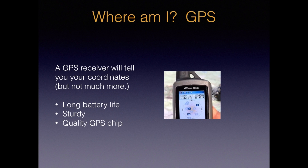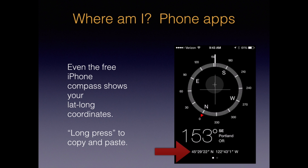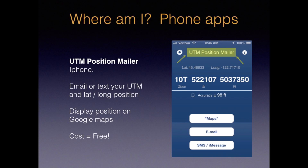Here are a few ways to get your coordinates. One is a dedicated GPS receiver. These are heavy, expensive, and only do one thing, but they have long battery life, they're sturdy, and can often get a GPS signal in a canyon or under heavy tree cover better than a cell phone. Hey iPhone users — did you know that the free built-in Compass app also shows your latitude and longitude? You can do a long press on the coordinate to copy and then paste it into a text or email. Yes, this is not a UTM coordinate, but it's all the information that 911 would need to find you in the backcountry. Here's a free smartphone app I really like called UTM Position Mailer. It shows your position in UTM and latitude and longitude, and allows you to text or email your position along with a message.